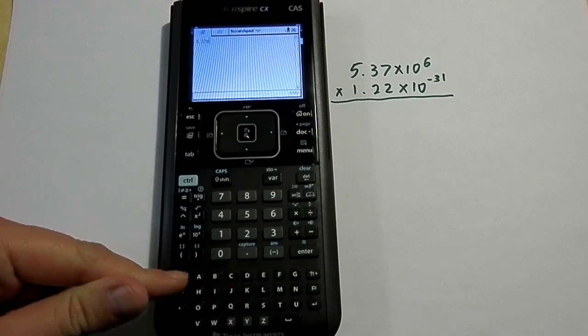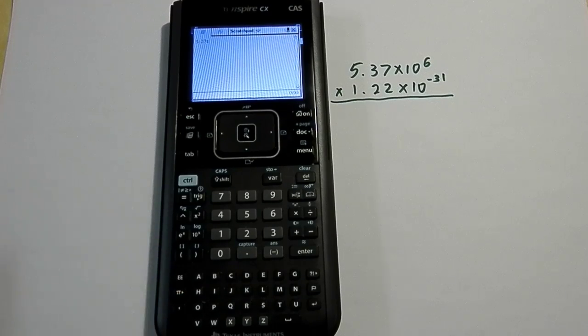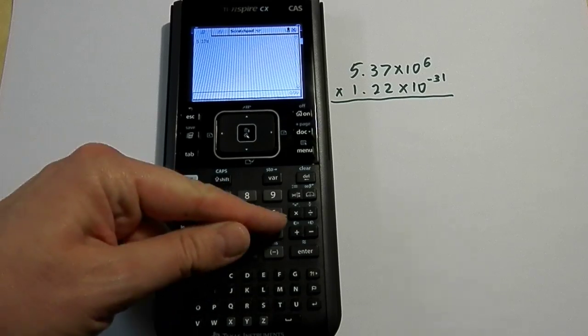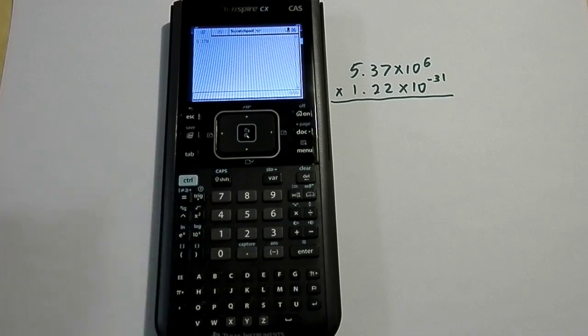Now I press the EE button, and on the display it shows E because it knows that I'm doing scientific notation. I don't have to hit the multiplication button. I don't have to type in a 10 or anything.